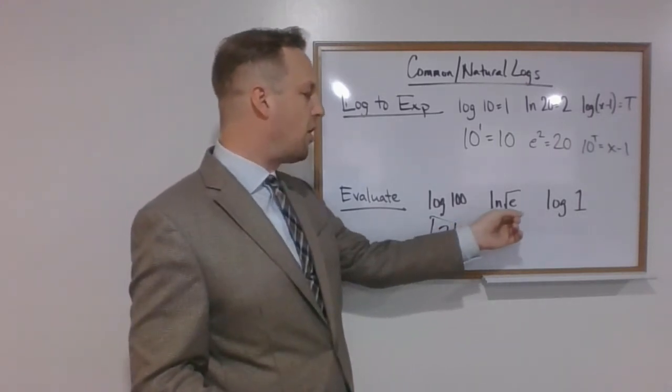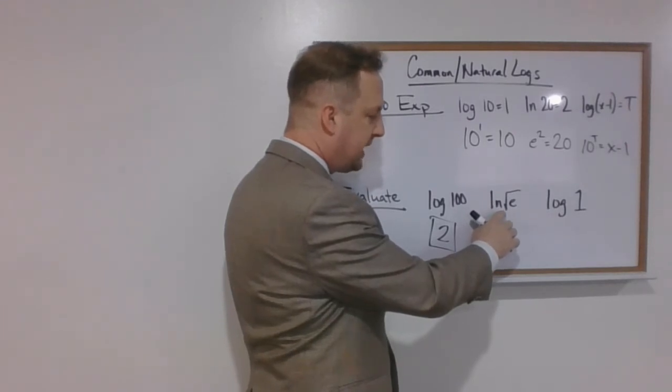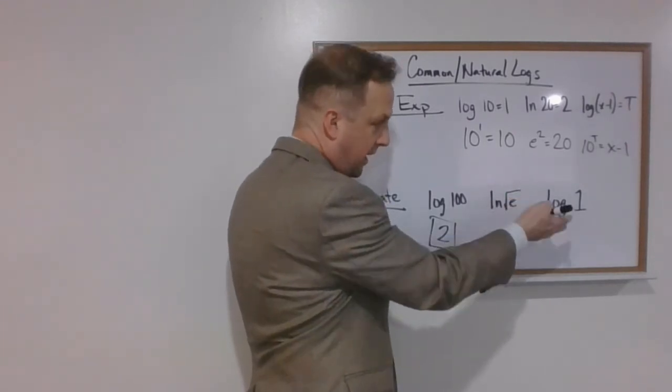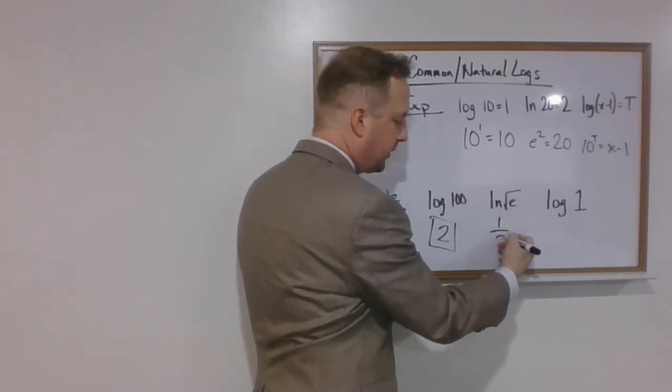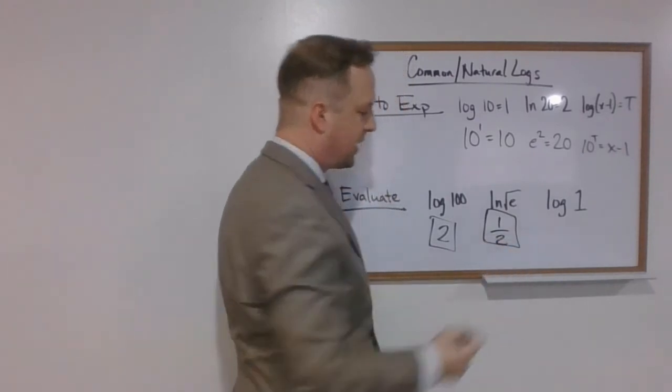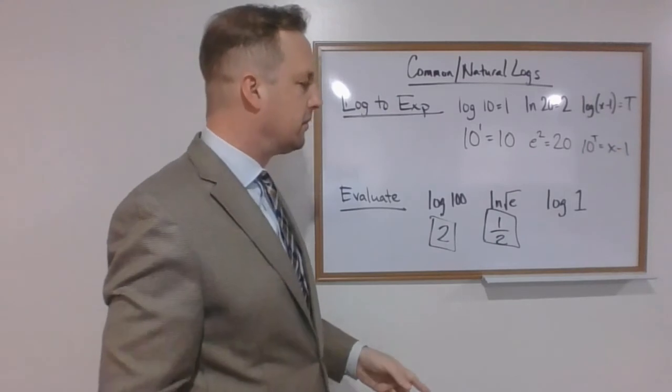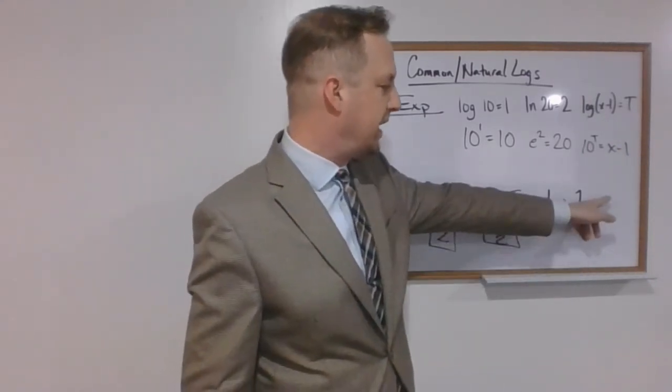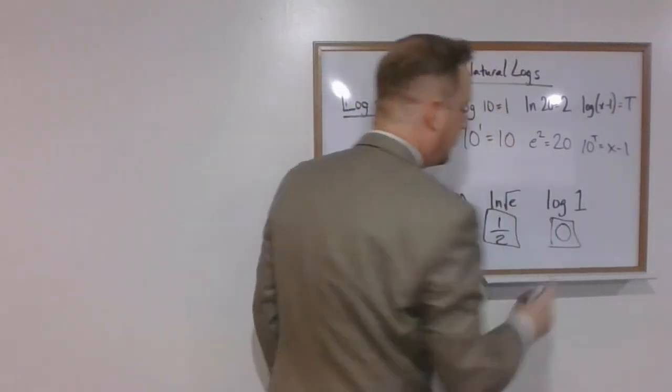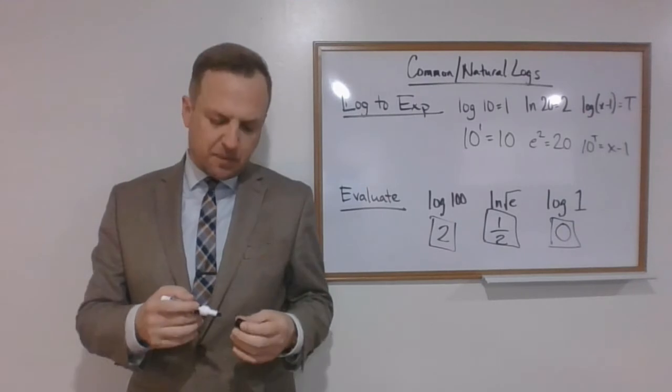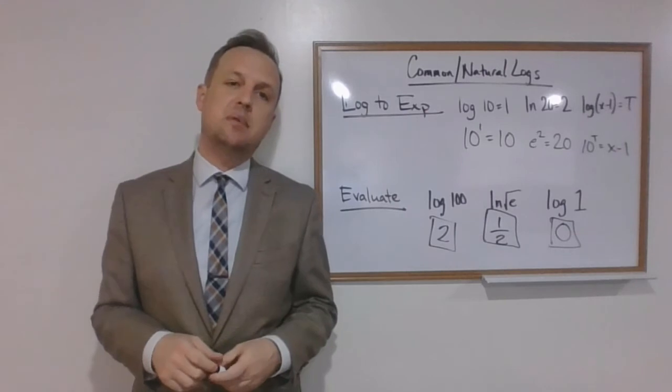Natural log of the square root of e. The base of a natural log is e. So what power, our answer, do we have to raise e to to get square root of e? And the answer there is 1 half. And then lastly, what is the log of 1? Base 10 raised to what power gives us 1? And the answer there is 0. So, this stuff for the most part is pretty simple once you can get your head wrapped around the format of it. The way we structure it and the way we convert.